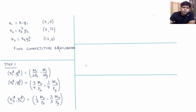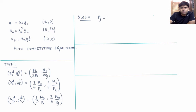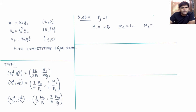Step two is to take one of the prices as numeraire and rewrite income as the value of the endowments. Let py equal 1. m1 is the value of endowment of individual 1, which is 2px. m2 is the value of endowment of individual 2, equal to 12py, and since py is 1, m2 is 12. m3 is the value of endowment of individual 3, equal to 12px.